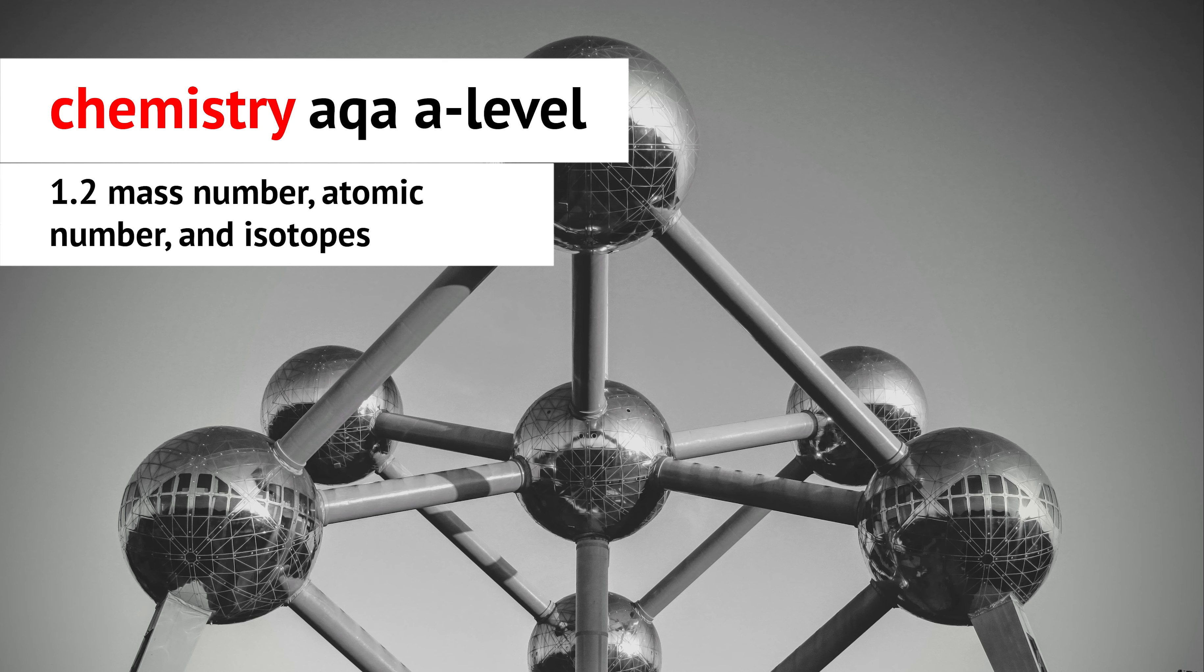Every single atom of any particular element has the same number of protons in its nucleus, and therefore the same number of electrons. But the number of neutrons may vary. Atoms with the same number of protons but different numbers of neutrons are called isotopes. Different isotopes of the same element react chemically in exactly the same way as they have the same electron configuration.